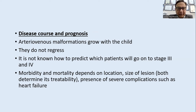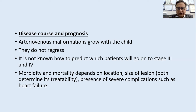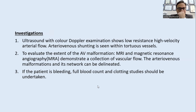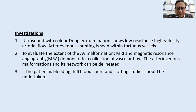AV malformations grow with the child and do not regress. Morbidity and mortality depend upon the location and size of the lesion. Investigations include ultrasound with colored Doppler showing low resistance and high velocity arterial flow with arteriovenous shunting. MRI and MRA demonstrate the collection of vascular flow and delineate the network. Full blood count and clotting studies are essential if the patient is bleeding.